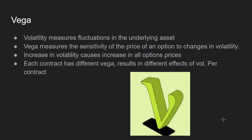Vega measures the volatility impact for that specific option. If the stock price moves in the right direction and it's volatile, Vega will be higher. If there's volatility but the stock moves in the wrong direction, Vega will be lower even though the contract price may change a little. Each contract has a different Vega, resulting in different effects of volatility per contract. It benefits the contract more when price moves in the direction you want.